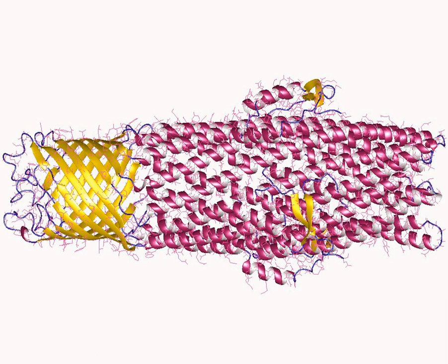Efflux systems function via an energy-dependent mechanism, active transport, to pump out unwanted toxic substances through specific efflux pumps. Some efflux systems are drug-specific, whereas others may accommodate multiple drugs with small multidrug resistance transporters.